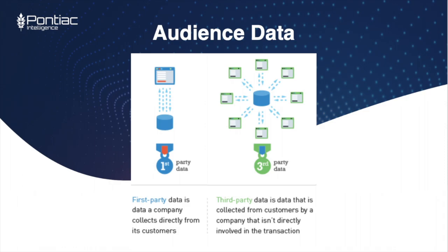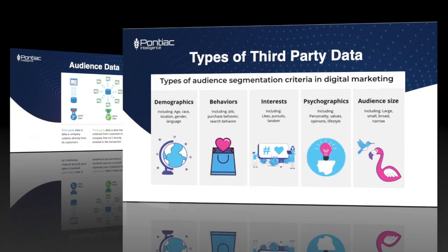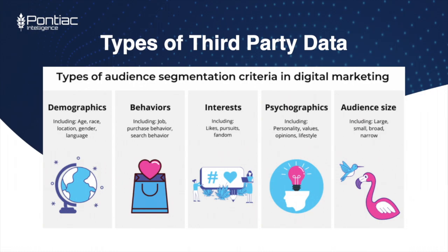First-party data typically comes in the form of CRM lists with users' names, email addresses, postal addresses, and more. Third-party data is prepackaged by a company who sells data specifically, such as Oracle, GrapeShot, CrossX, and more. Third-party data allows you to choose parameters of users based on behavioral, demographic, contextual, brand safety categories, and more.